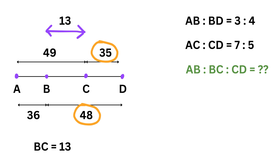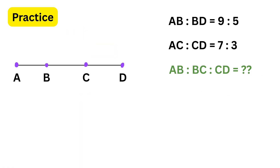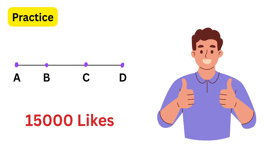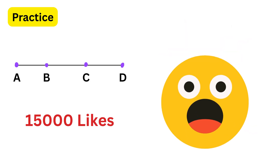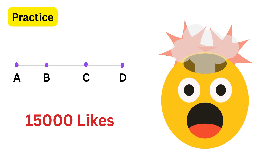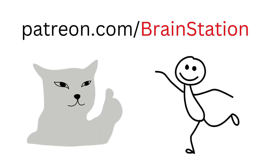Finally, the ratio of AB to BC to CD becomes thirty-six to thirteen to thirty-five. That was super fun! Now try the same problem but with different ratios, and let me know your answer in the comments. If this video gets fifteen thousand likes, then I will make another such amazing trick video.